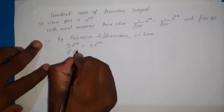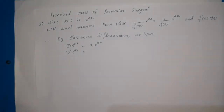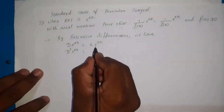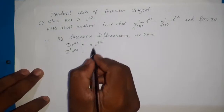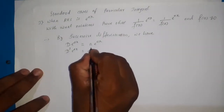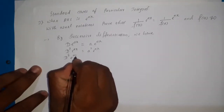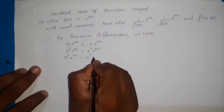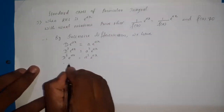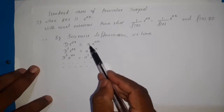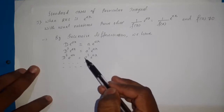Then D² of e^(ax) — that is d²/dx² of e^(ax), the second-order derivative. We already have the first-order derivative, so differentiating again: the derivative of e^(ax) is a·e^(ax), and since a is already there, it becomes a²·e^(ax). Then D³·e^(ax) becomes a³·e^(ax), and so on.